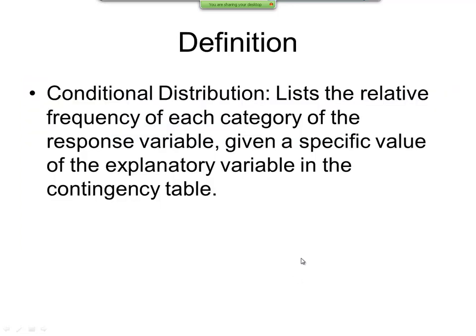Now we have a conditional distribution. This lists the relative frequency of each category of the response variable, given a specific value of the explanatory variable in the contingency table.